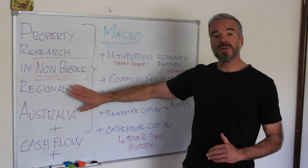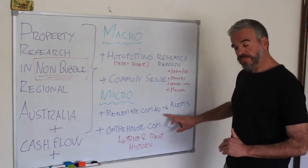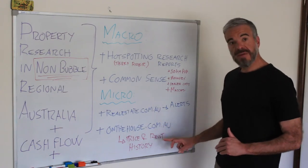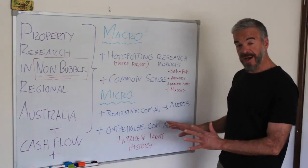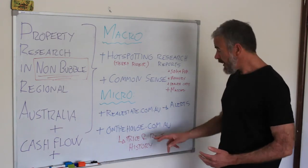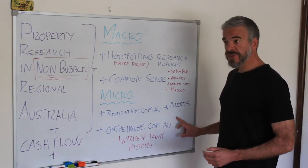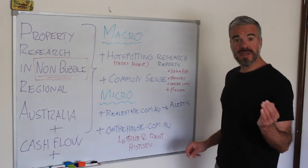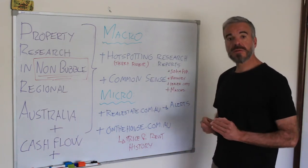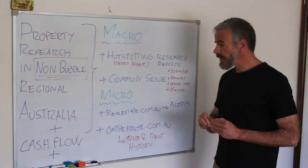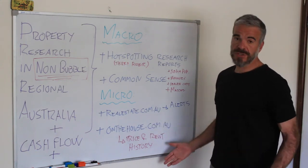Moving into the micro economic area — once you've selected a non-bubble regional center to invest in, this is where you start narrowing down your options. I recommend opening a profile on realestate.com.au. They have property alerts, which means you can select an area and specify, for example, a three-bedroom home with a 500 square metre lot within a certain price bracket, and it will send matching listings directly to your inbox. That's pretty powerful.